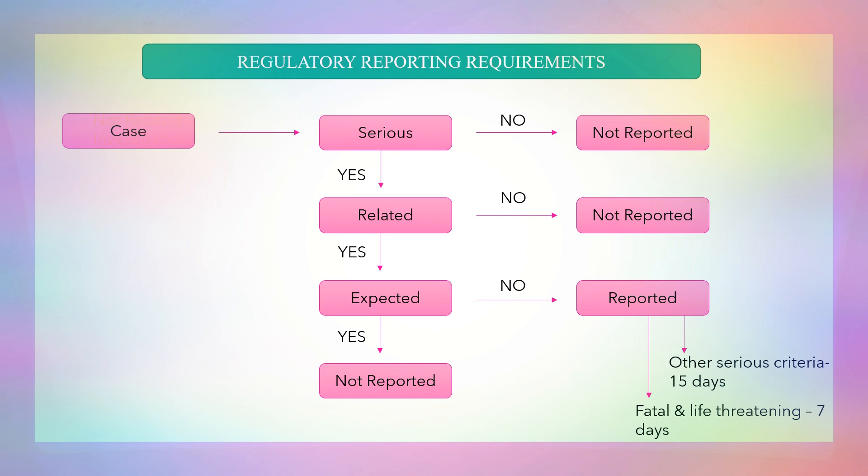If the case falls under these three criteria — serious, related, and unexpected — then it should be reported within the following timelines. If it is fatal or life-threatening, it should be reported within seven days from the day on which the adverse event is reported. If the event falls under other seriousness criteria, it should be reported within 15 days.